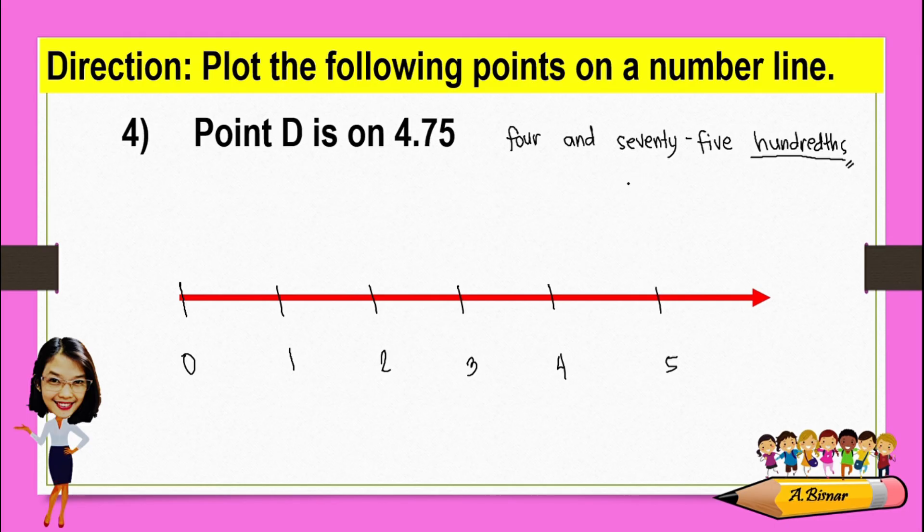So we can write this as a fraction. 75 hundredths can be simplified to 3/4, because you divide both the numerator and denominator by 25.